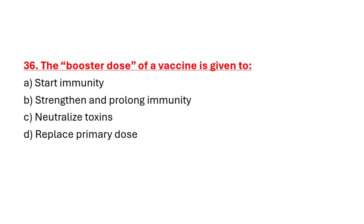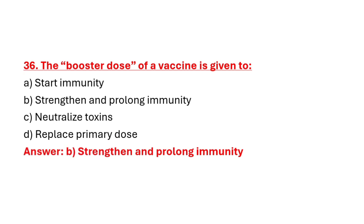Question 36: The booster dose of vaccine is given to. Option A: Start immunity. Option B: Strengthen and prolong immunity. Option C: Neutralize toxins. Option D: Replace primary dose. Correct answer is Option B: Strengthen and prolong immunity.